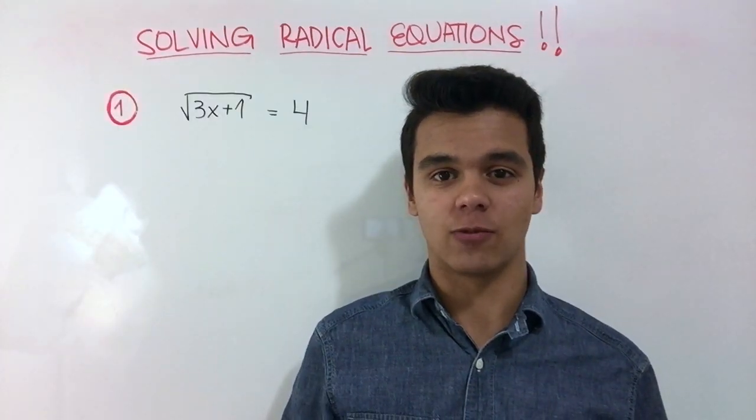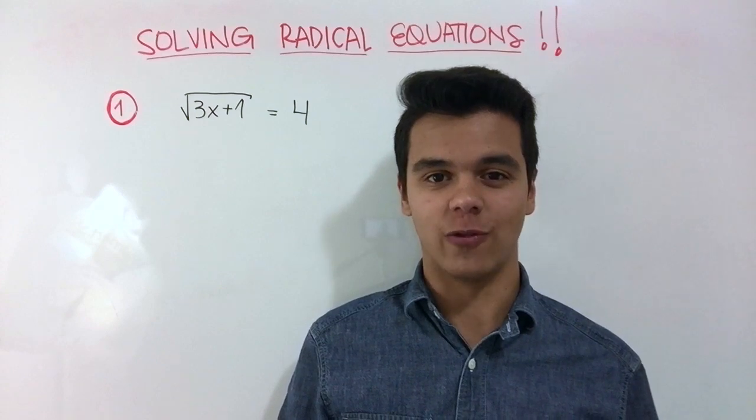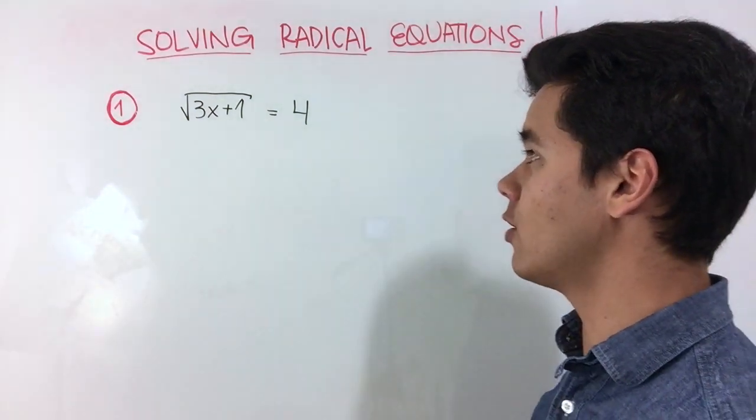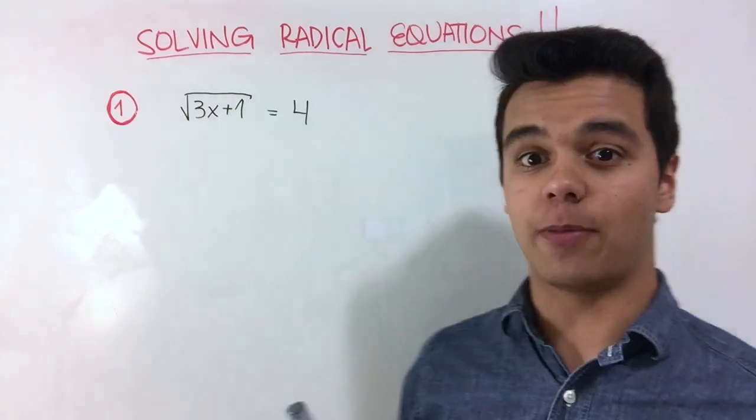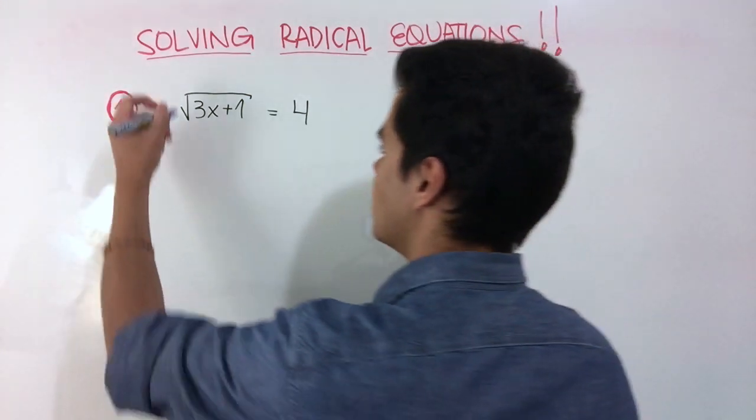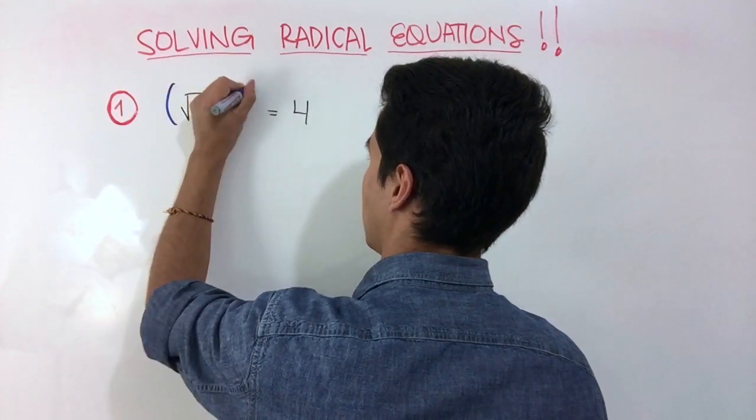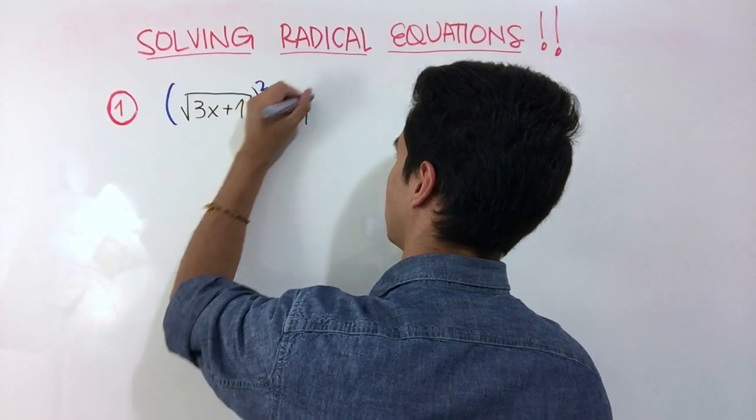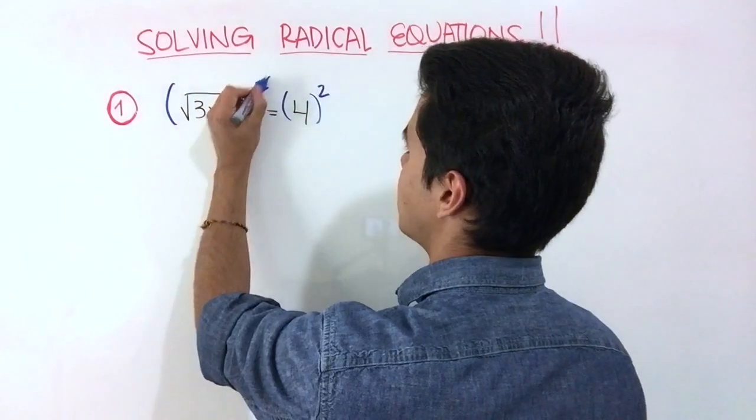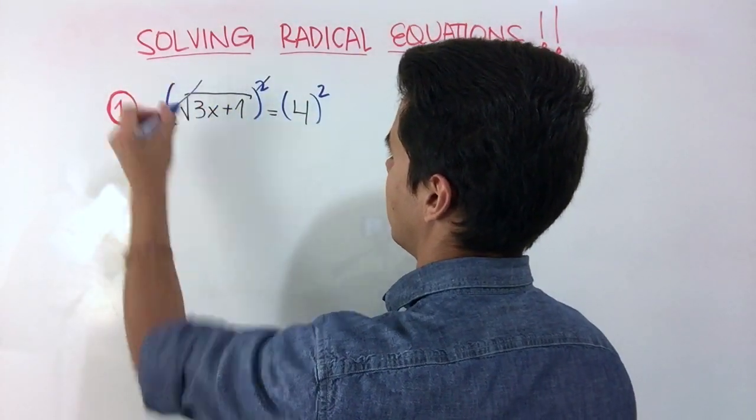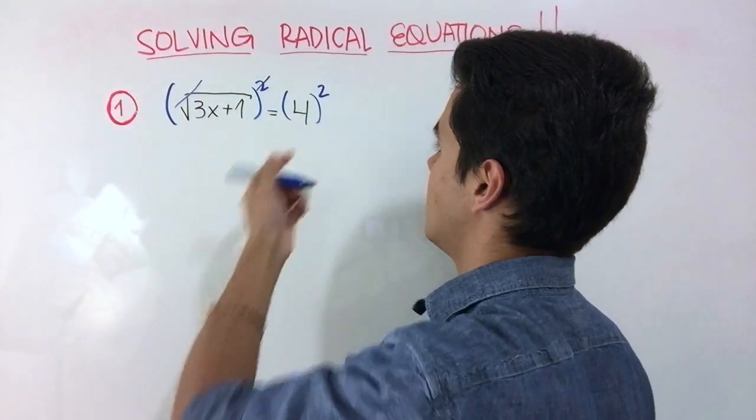The first example is the square root of 3x plus 1 equals 4. To solve for x, we're going to raise the entire expression to the power of 2. This power will cancel out with the square root, and 4 to the power of 2 is 16.